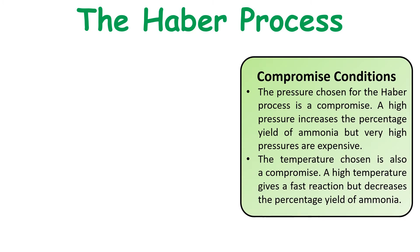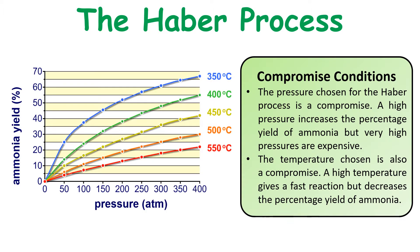There are a number of compromise conditions used in the Haber process. The pressure chosen is a compromise: a high pressure increases the percentage yield of ammonia, but very high pressures are very expensive. The temperature chosen is also a compromise: a higher temperature gives a faster reaction, however it decreases the percentage yield of ammonia. In exam questions you will often see a graph showing how increasing atmospheric pressure increases the percentage yield.